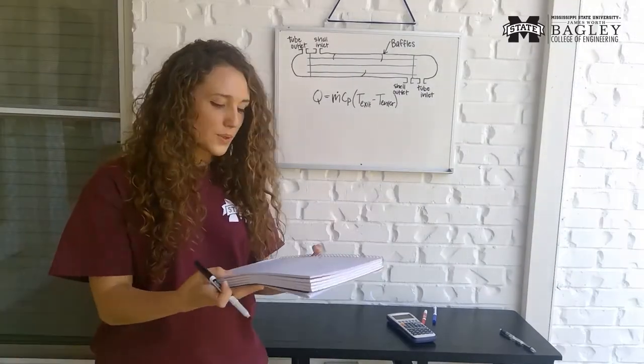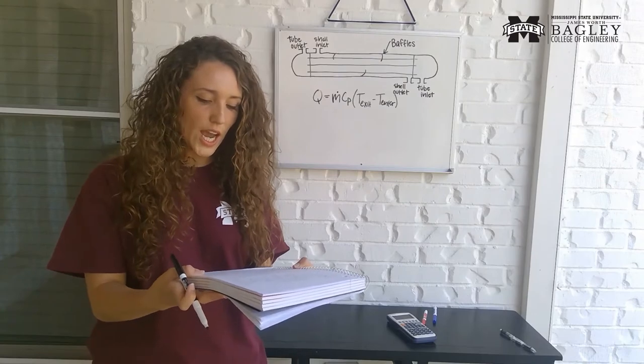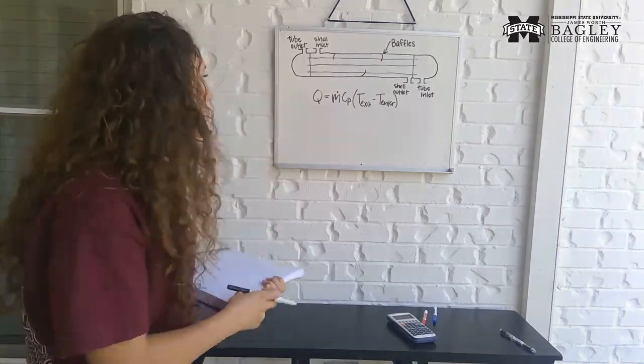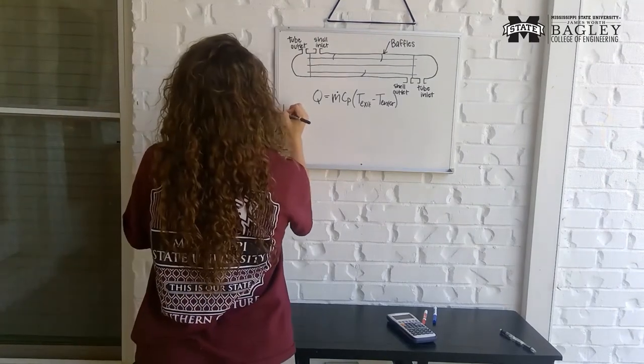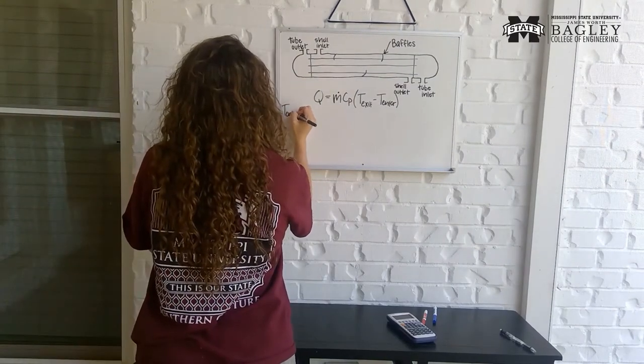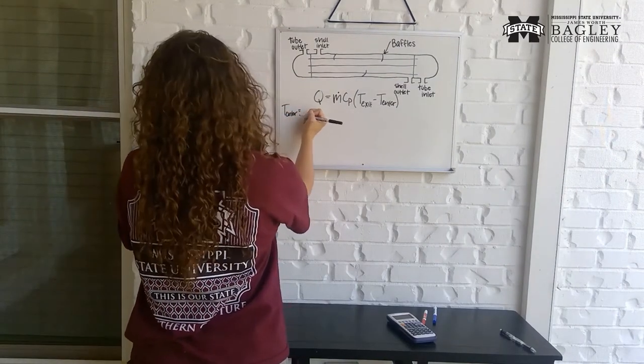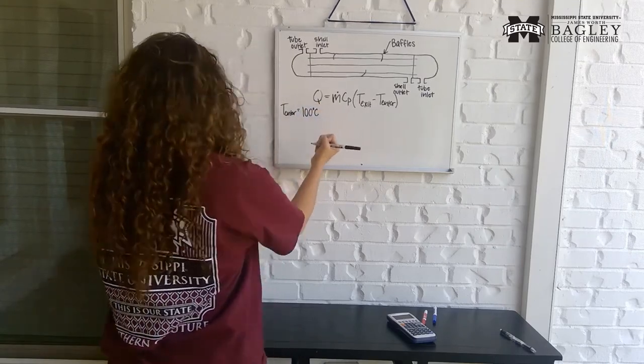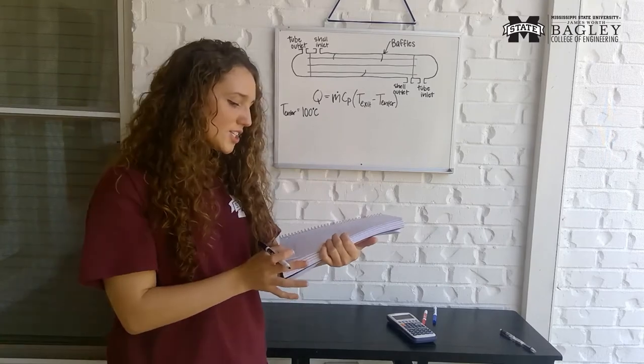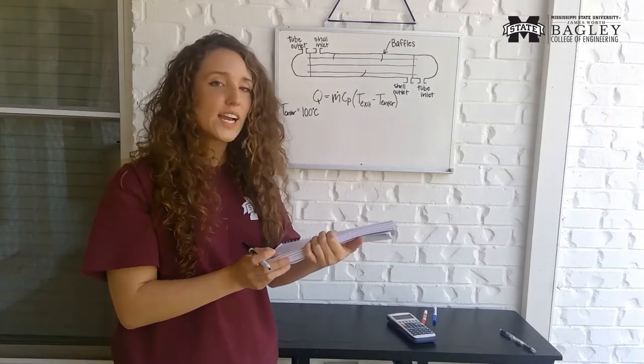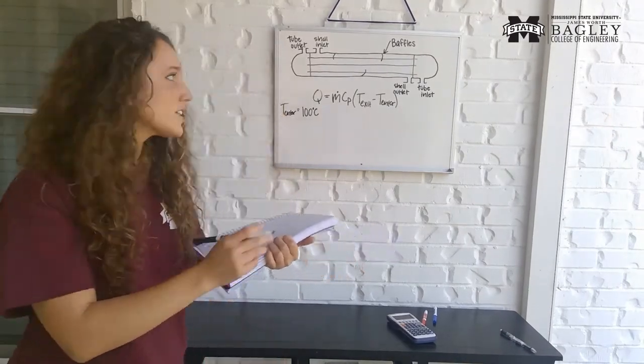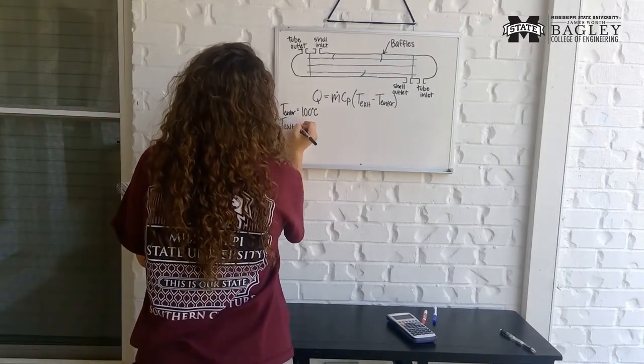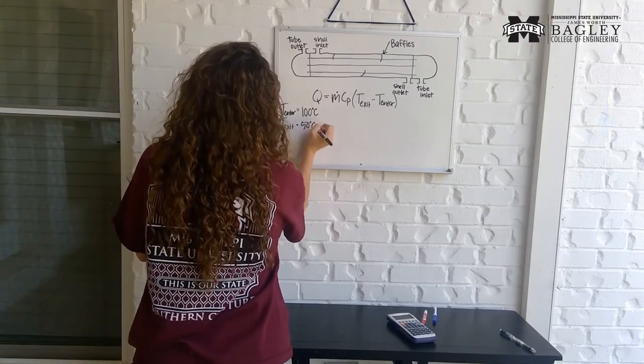This one says fluid A enters the heat exchanger at 100 degrees Celsius. I'm going to write down our givens as we go along. So T enter is equal to 100 degrees Celsius. Fluid A enters the heat exchanger at 100 degrees Celsius and exits at 50 degrees Celsius. So then we have T exit equal to 50 degrees Celsius.